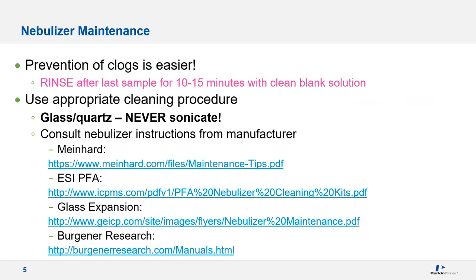The best approach is to prevent your nebulizer from getting clogged in the first place. The simple thing to do is make sure you rinse it with a clean acid blank solution after the last sample for 10 to 15 minutes. This is best done with the plasma still on, and you'll also be rinsing the spray chamber. This will prevent salts from building up in the spray chamber and depositing on your nebulizer after the instrument is shut down. You must use an appropriate cleaning procedure for your particular nebulizer — please consult the manufacturer for detailed procedures.